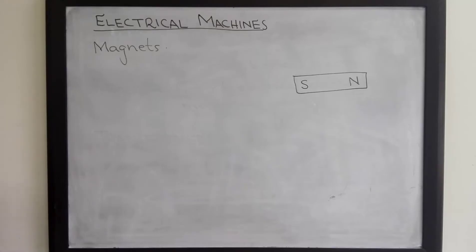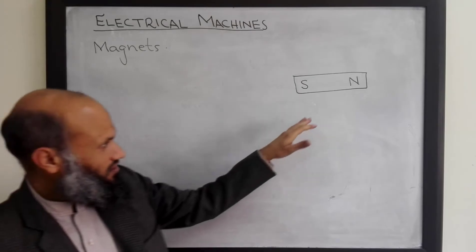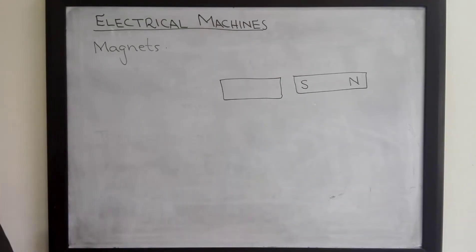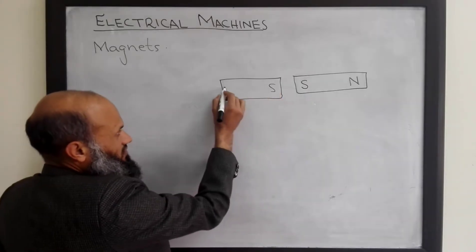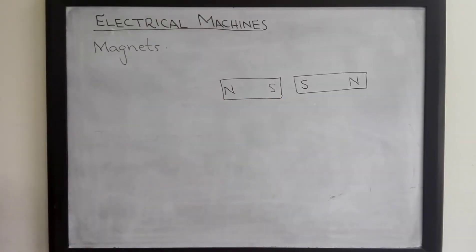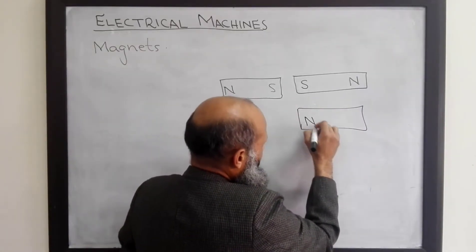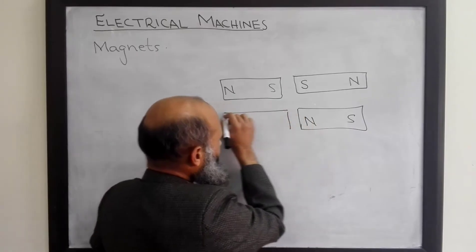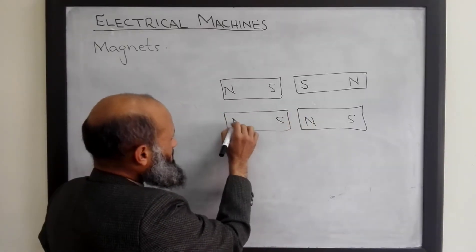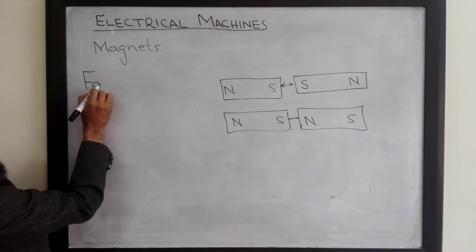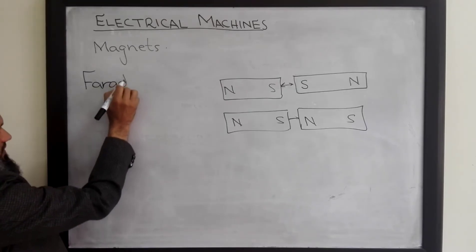These magnets also exhibit a few more properties. If we place two magnets with similar poles facing each other, they tend to repel each other, while poles with opposite polarity tend to attract each other. To explain this phenomenon, Faraday proposed the concept of magnetic lines of flux.